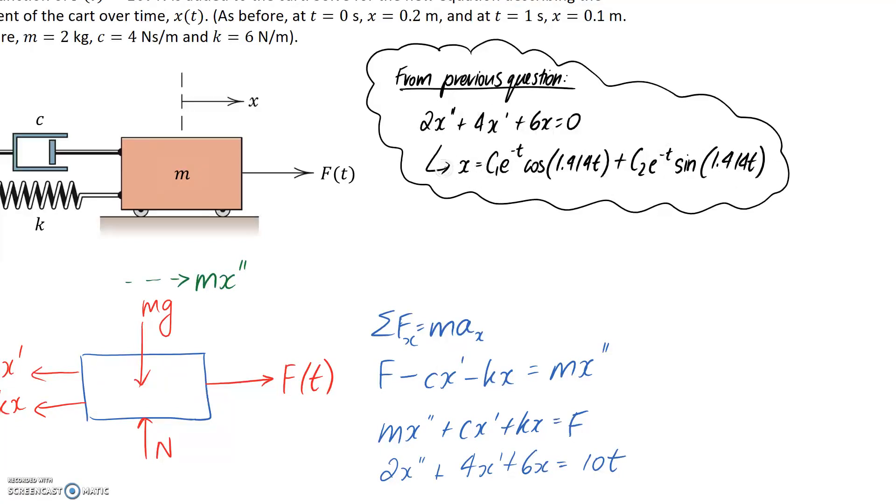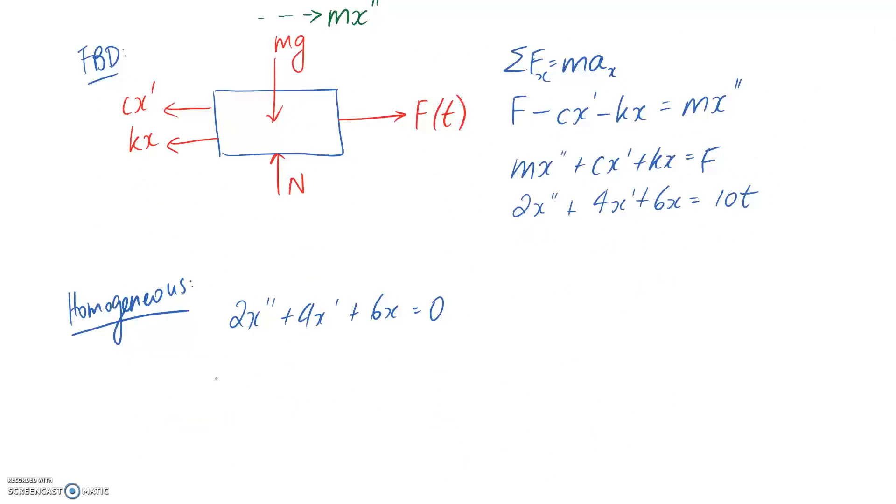So I've popped up here from the previous question, we can get that this is the solution, and go back and review that previous video if you want extra detail on that. So the solution to this is a homogeneous solution, xh. It's going to be c1 e to the negative t cos of 1.414t plus c2 e to the negative t sine of 1.414t. That's the first part of the question done.